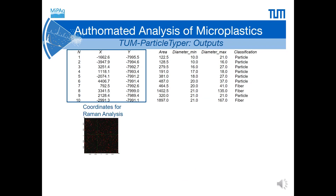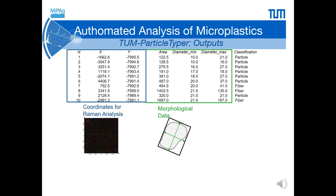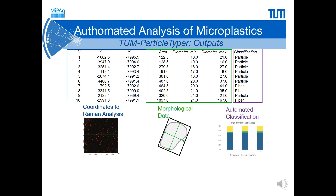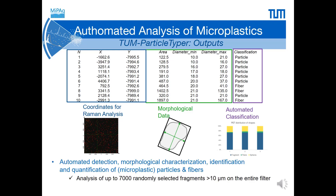We obtained coordinates for Raman measurements. Also, morphological characteristics of fragments — their area as well as minimal and maximal Feret diameter — are determined. All together, this allows us to perform automated classification of fragments. Thus, automated detection, morphological characterization, identification, and quantification of microplastic as well as non-plastic particles and fibres is possible.